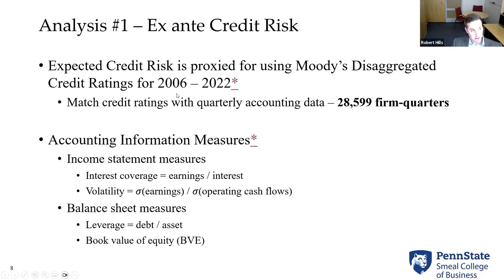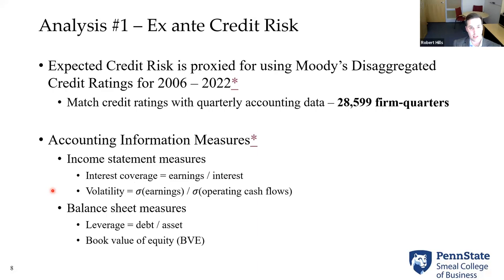Now regarding pieces of accounting information: we're primarily looking at two income statement measures — interest coverage and a volatility measure (standard deviation of cash flows) — and two balance sheet measures: leverage and book value of equity. In all regression specifications we also control for firm size as total assets.